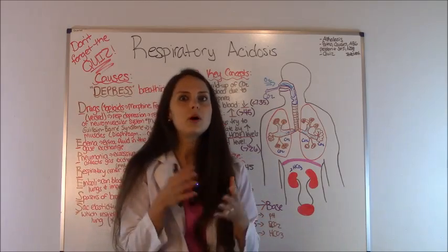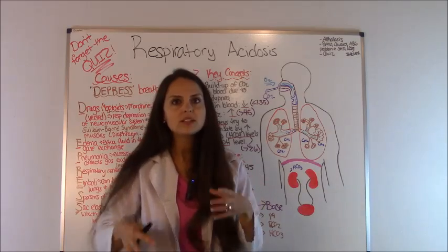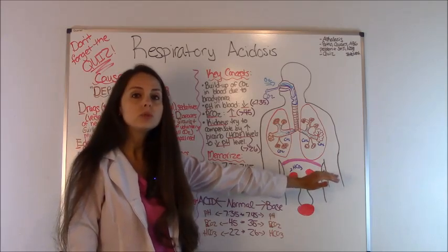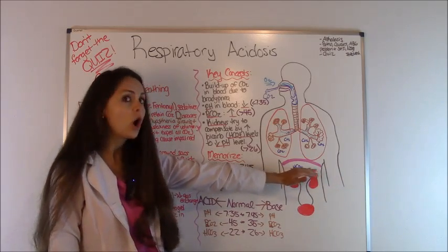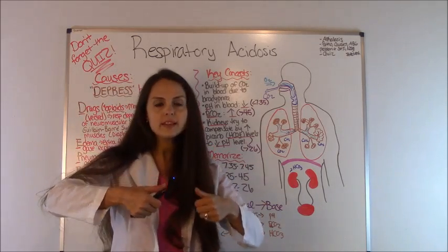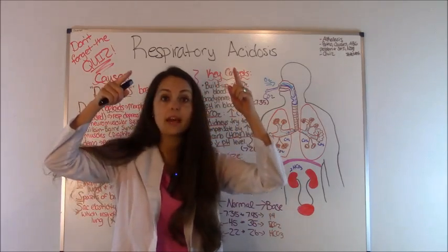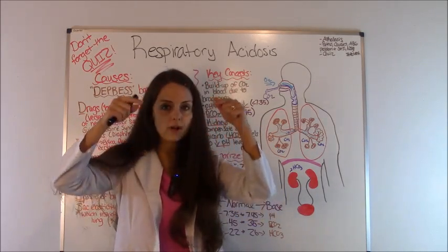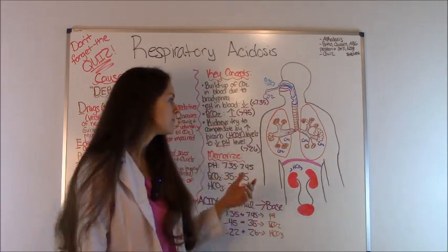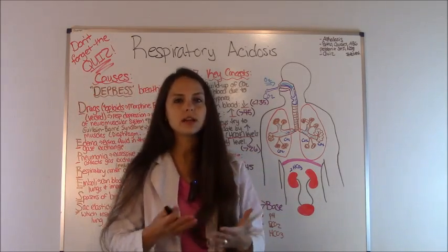Whenever this happens in the body, remember your body loves homeostasis. It loves to keep everything nice and equal, so it'll use other systems of the body to try to regulate this. The kidneys will actually start to release bicarbonate HCO3, and you will start to see these levels rise. The reason they're trying to rise is to help increase that pH level to make it normal because right now it's decreased. By releasing the bicarb, it will help increase it. Any levels greater than 26, if you see that in a blood gas, that's what your body's trying to do, is trying to compensate.